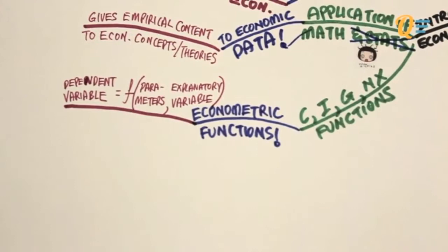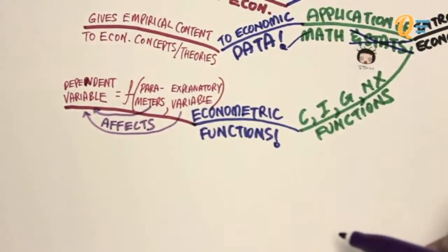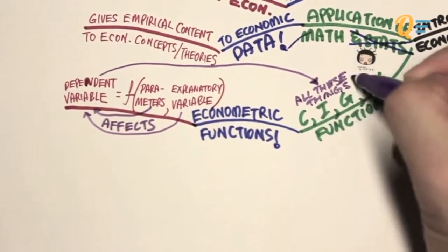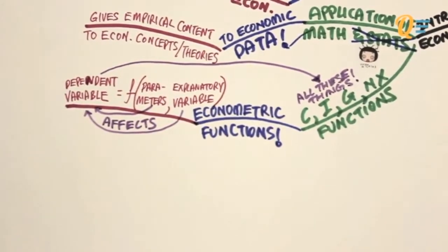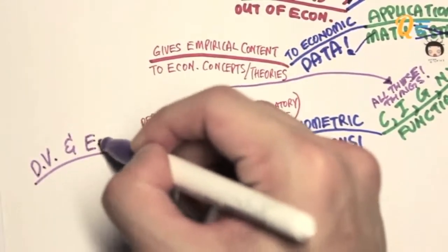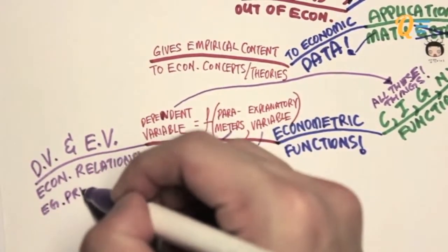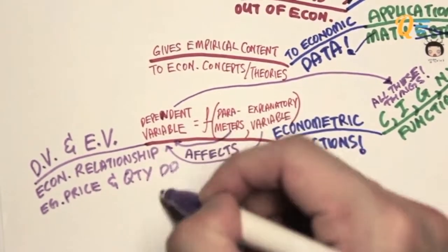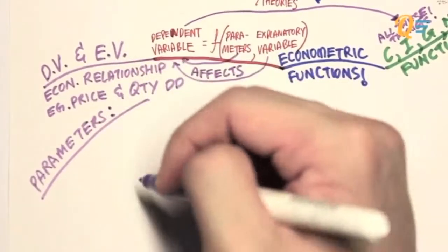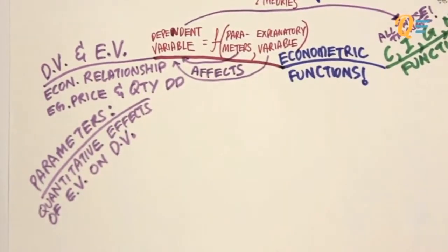So in simple summary, the explanatory variables and the parameters are the ones that affect the dependent variable. Therefore your dependent variable is a function of the two things that you see on the right-hand side. So the dependent variable can be your consumption, investment, government spending or your net exports. So the relationship between the dependent variable and the explanatory variables are what we call economical relationships, like price and quantity for example. And the parameters can be defined as the quantitative effects that the explanatory variable has on the dependent variable.